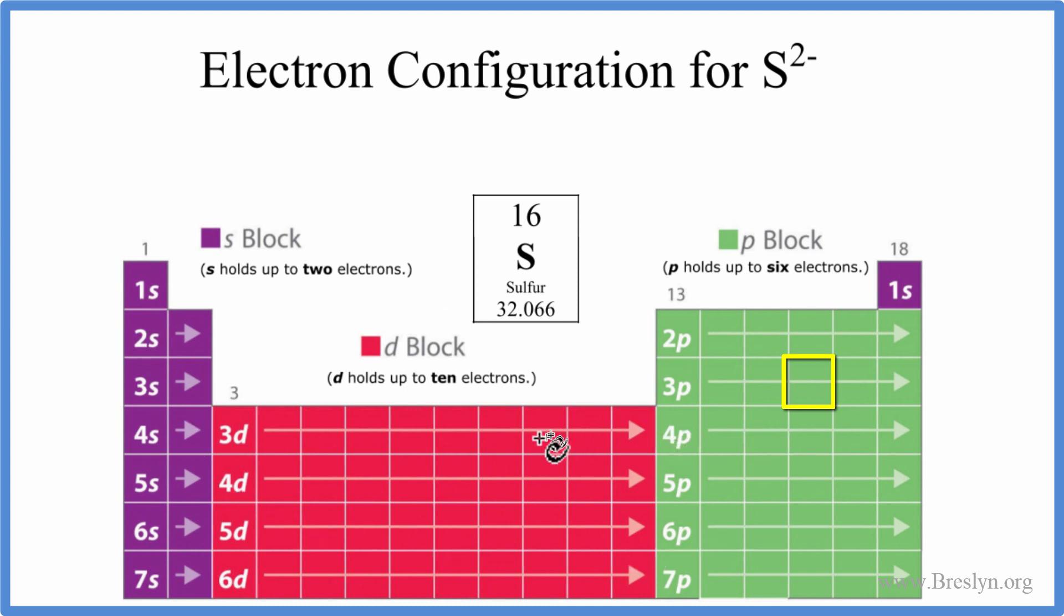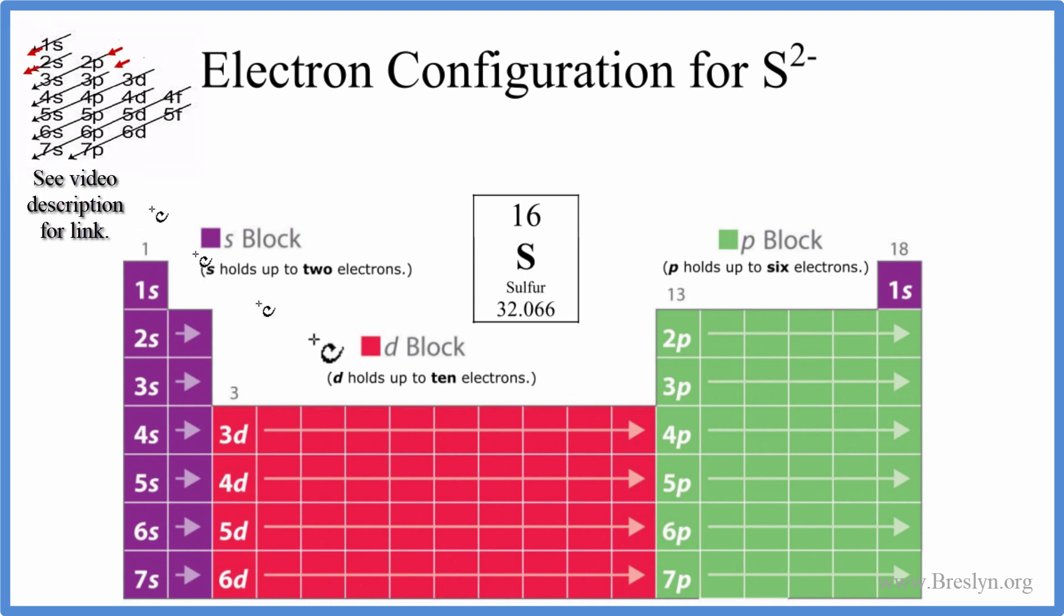We use this periodic table here that's divided up into these orbitals to write the configuration. You can also use this chart up here. There's a link in the description that explains how to do that, but this is really, I think, a better way to do it. So let's do it.